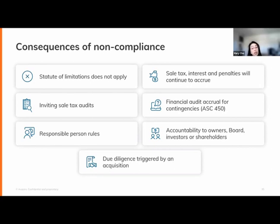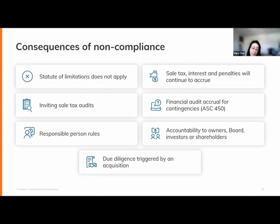If you have internal auditors reviewing your financials, they may want you to book an accrual on your balance sheet for the contingency — ASC 450. This is like a black eye because it doesn't look good — you're not compliant. They want to book an accrual to protect the interests of owners, investors, the board, and shareholders, who are the external factors you need to consider.